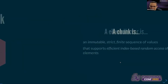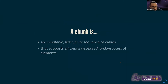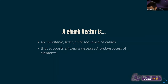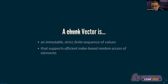With FS2 we have this chunk data type. The chunk is a collection. Looking at the Scala doc of the chunk data type, a chunk is an immutable, strict, and finite sequence of values that supports efficient index-based random access of elements. The problem is that in Scala we already have a data type that meets these constraints: the persistent vector. Persistent vector is immutable, strict, finite, and supports effective constant time indexing.